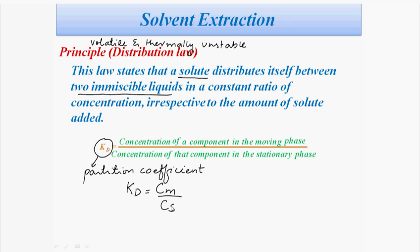In solvent extraction, there is an equilibrium between the solute concentration in the mobile and stationary phase. We usually use a separating funnel. The solute can be separated from a solution by shaking the solution with a solvent in which the solute is more soluble, and the added solvent should not mix with the original solution. We place both liquids into the separating funnel, shake them together, and allow them to separate.